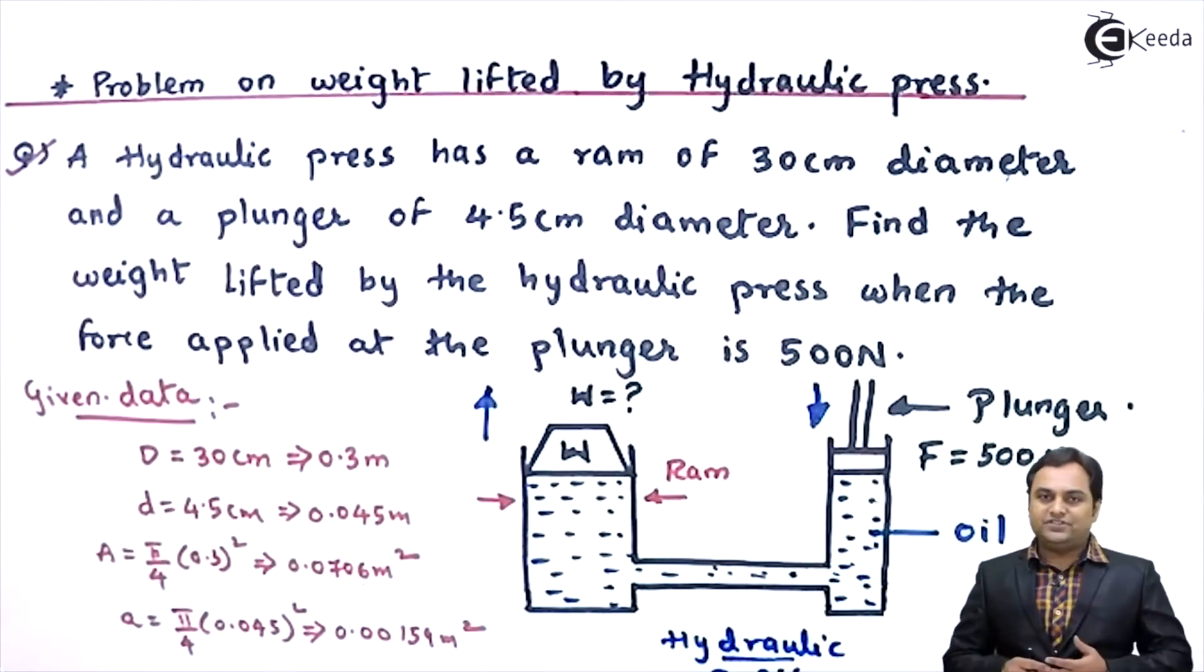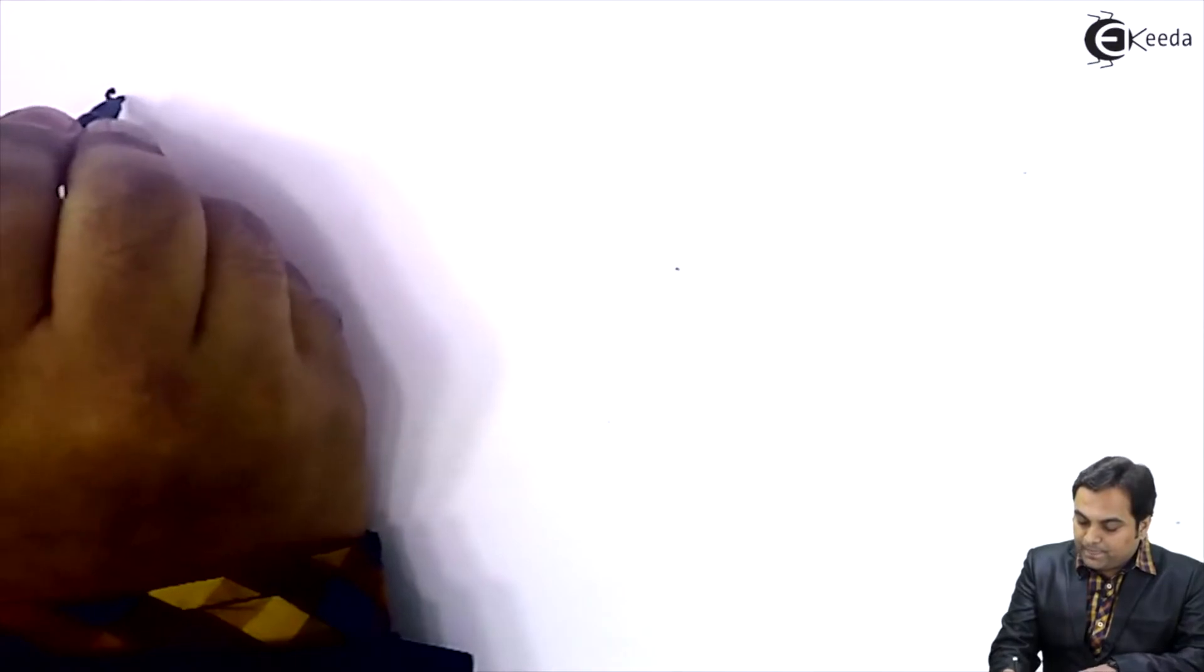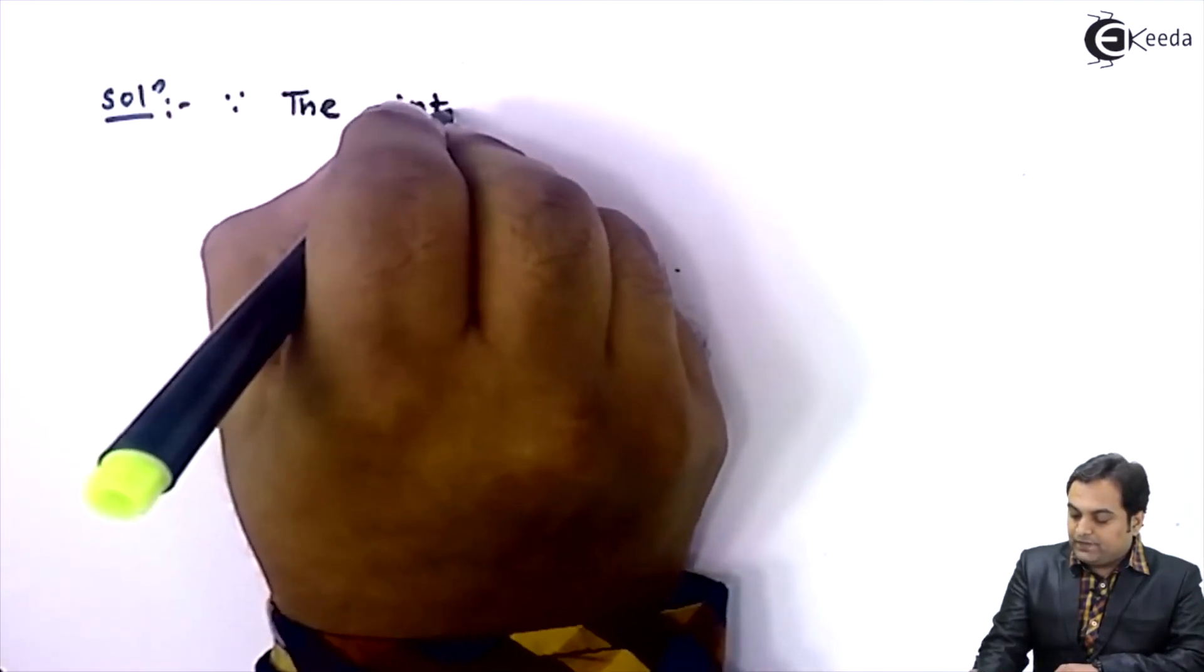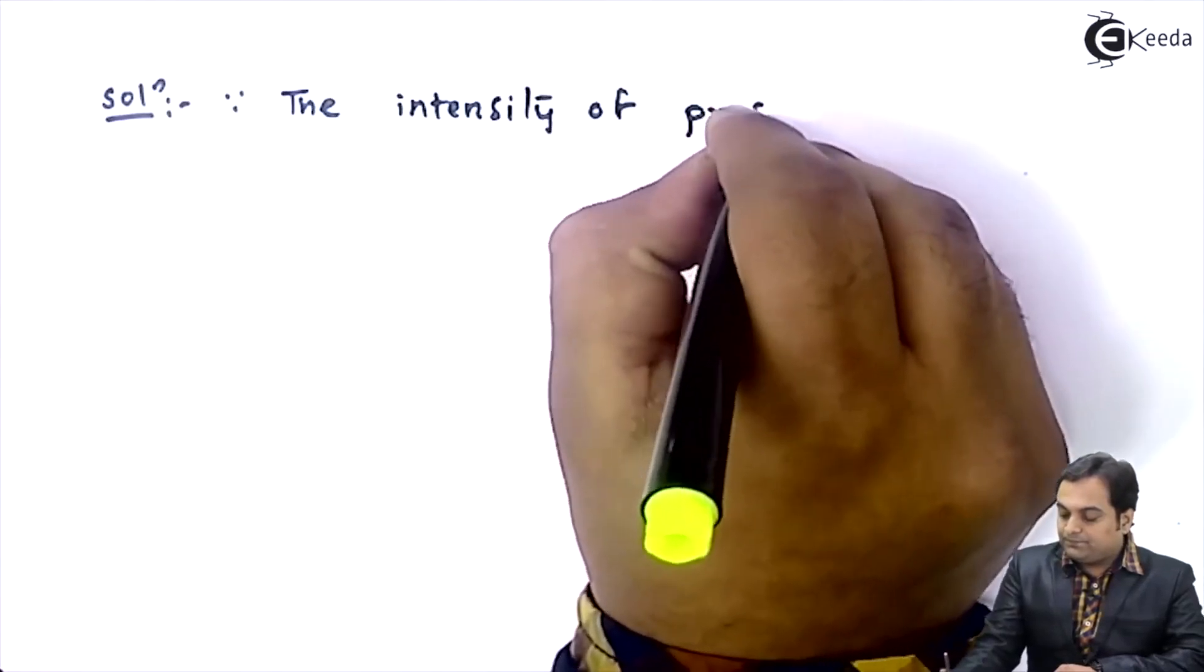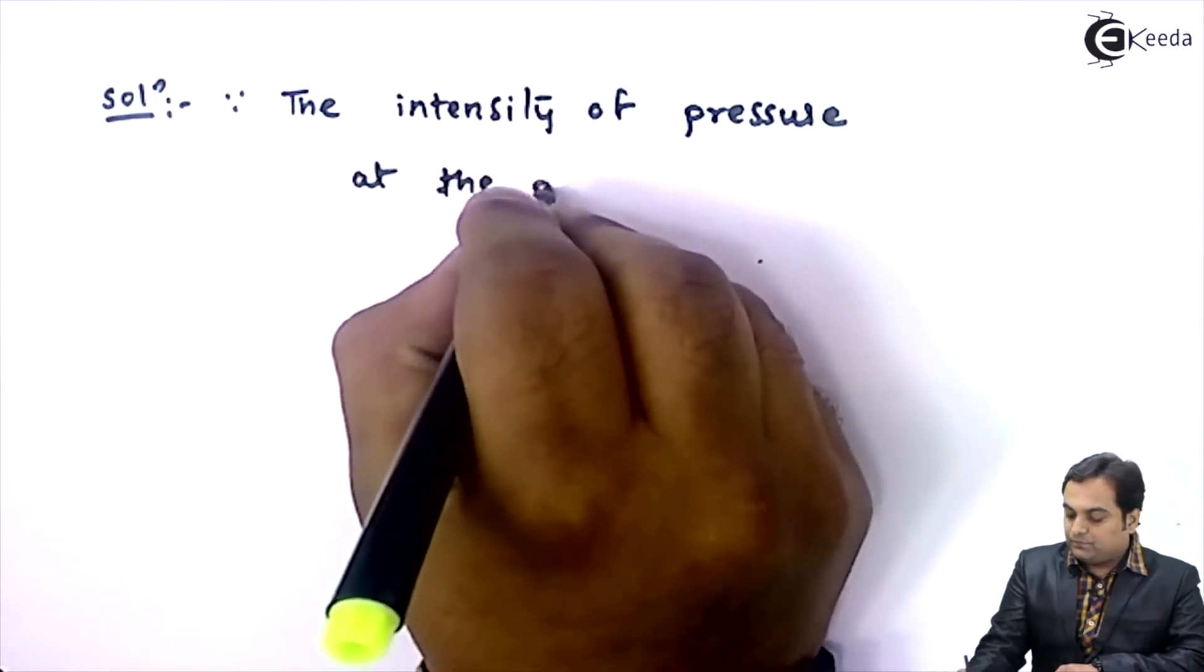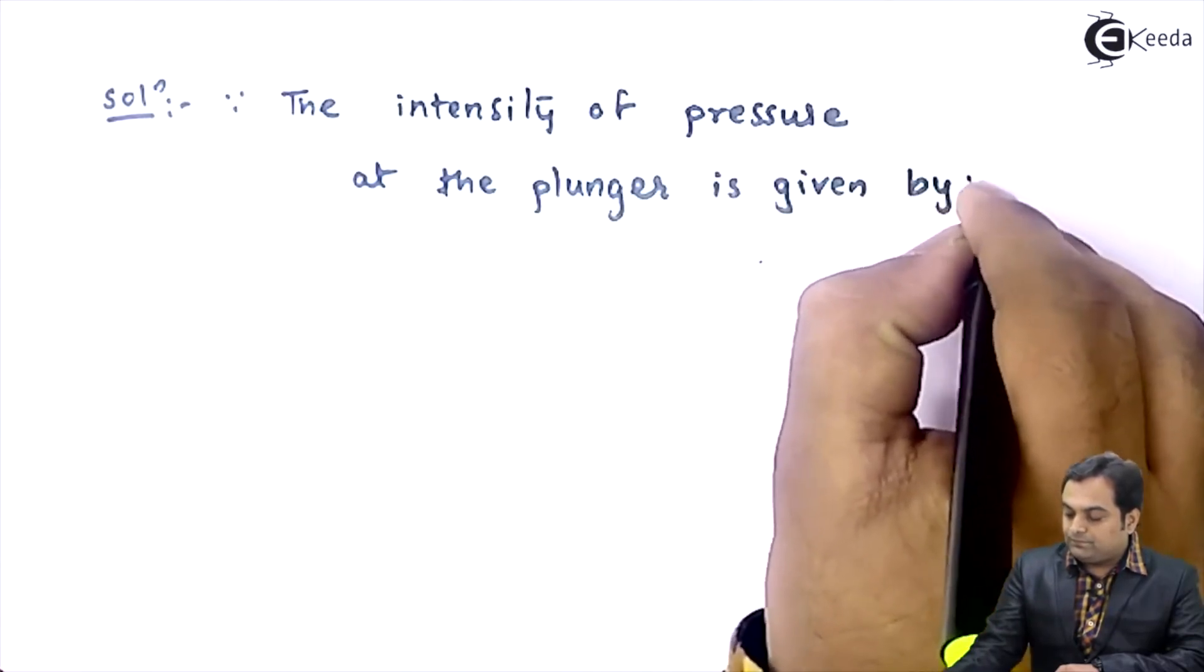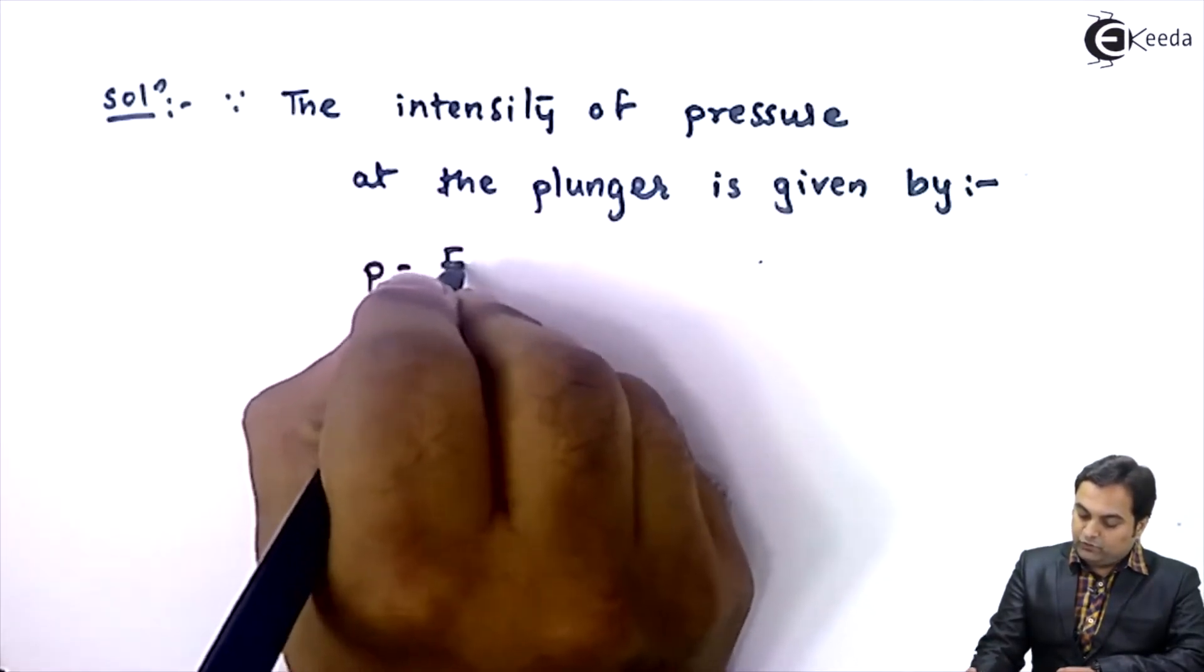Now let us start with the solution for this problem. In solution, I'll say that since the intensity of pressure at the plunger is given by, that intensity of pressure is equal to force upon area.